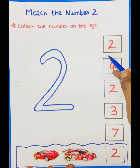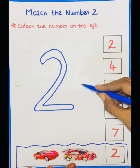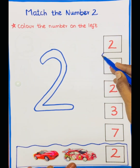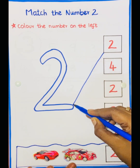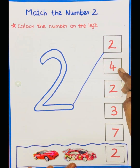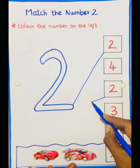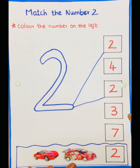So we have to match it. See the number 2, so we have to match it. This is 4, 2. Then 3, 7, 2.